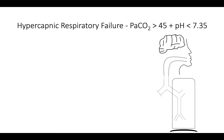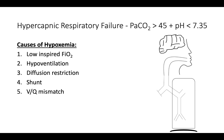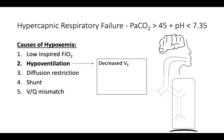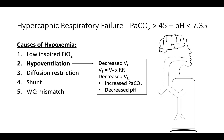Next, we transition to acute hypercapnic respiratory failure. As a reminder, it is defined by a PCO2 greater than 45 mmHg plus an accompanying respiratory acidosis. If hypercapnia is severe enough, it will ultimately result in hypoxemia. Hypercapnic respiratory failure is due to hypoventilation or decreased minute ventilation. Minute ventilation equals tidal volume multiplied by respiratory rate. Therefore, decreasing either the tidal volume or the respiratory rate will decrease minute ventilation, causing PCO2 to increase and pH to decrease.